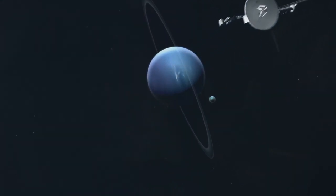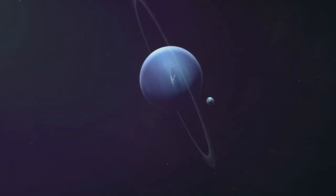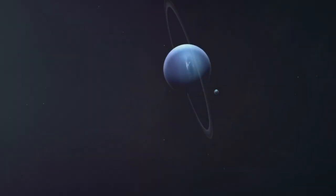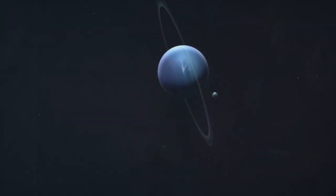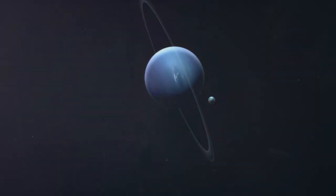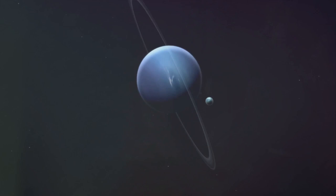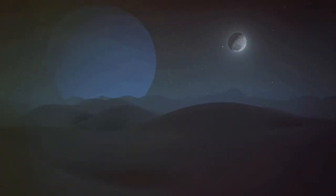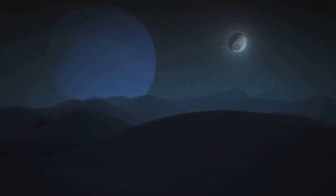Unlike most moons, Triton moves in a retrograde orbit. This means it circles Neptune in the opposite direction to the planet's rotation. How did Triton end up in such an unusual path? Scientists believe Triton was once a free-roaming object in the Kuiper Belt, a region of icy bodies beyond Neptune, until it got too close and was captured by the planet's gravity. From its retrograde orbiting Triton to its smallest moon, Nyad, Neptune's moons add more mystery to this distant blue world.